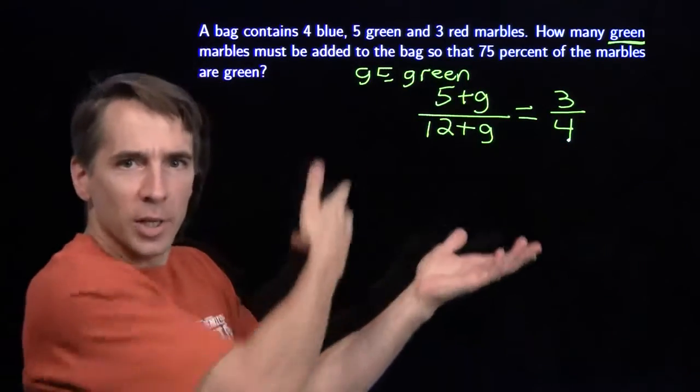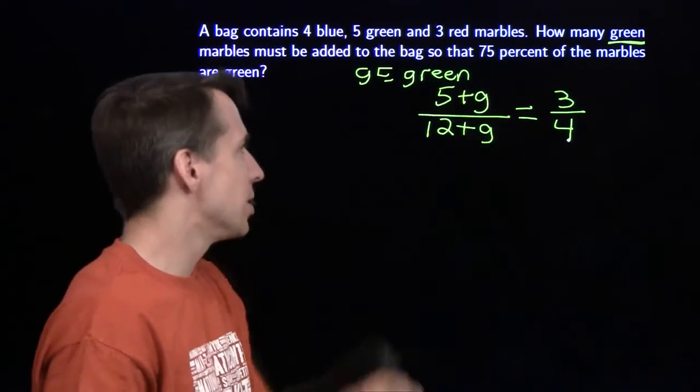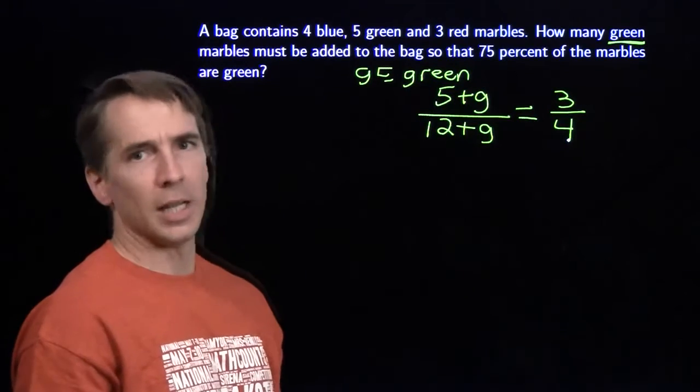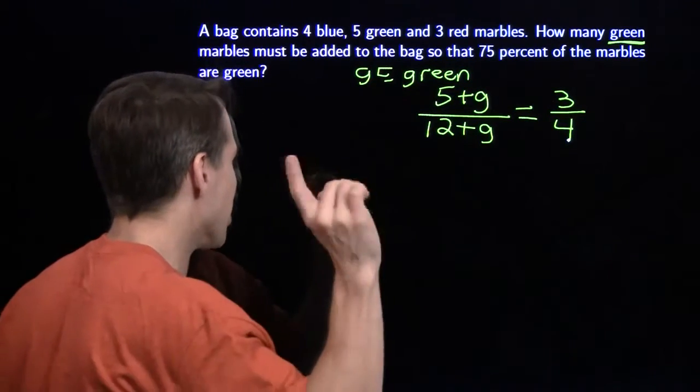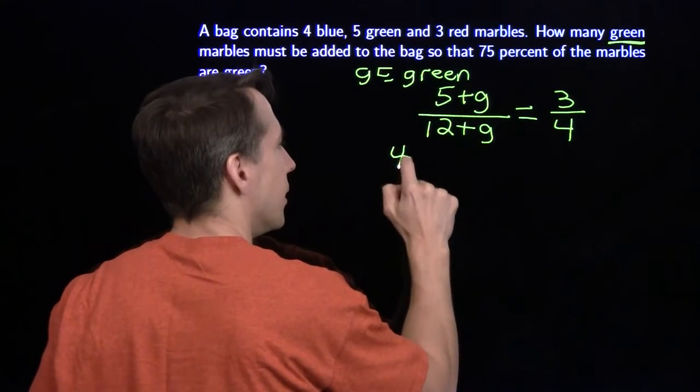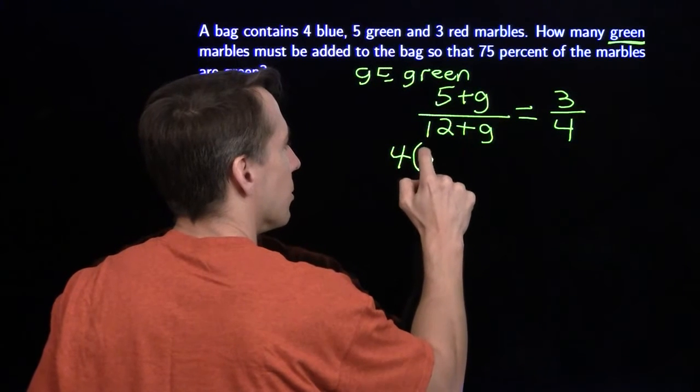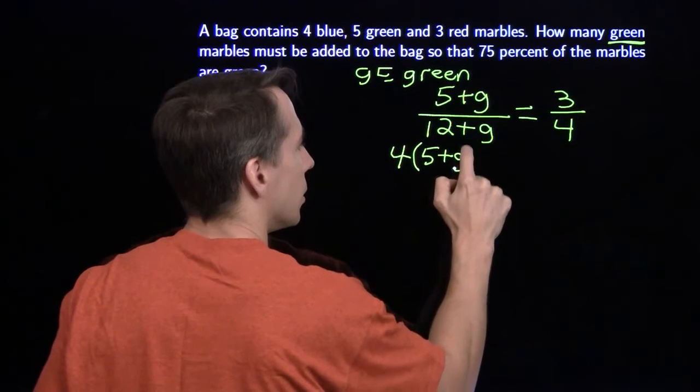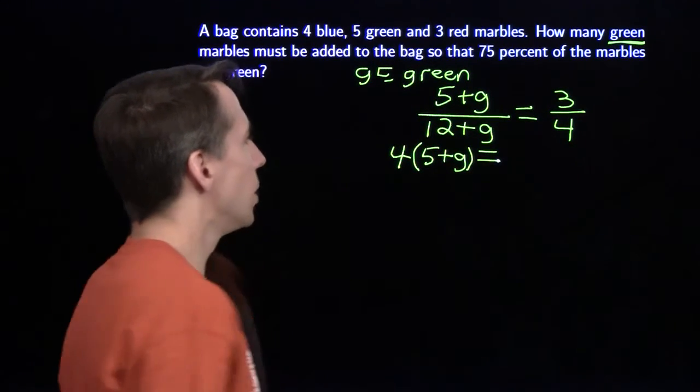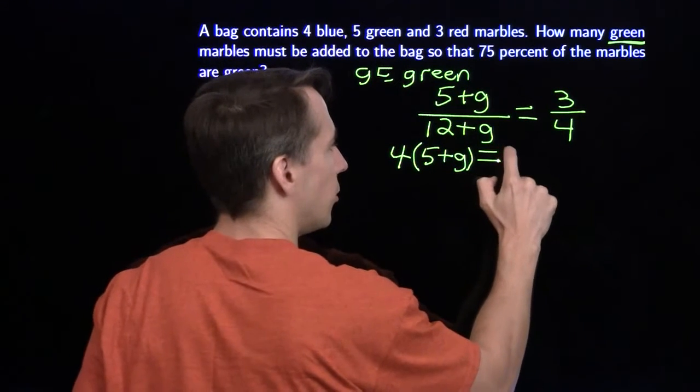Now I have my equation. We can just solve this. I'm going to multiply both sides by 4, multiply both sides by the 12 plus G. That gets rid of fractions. I like getting rid of the fractions.